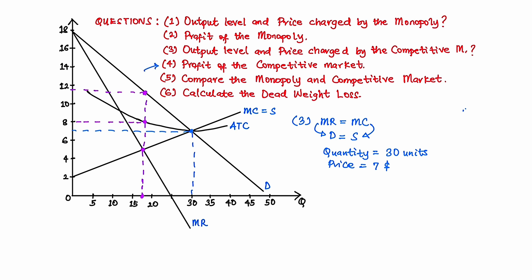Moving on to question 4: to determine the profit of the competitive market. The formula for profit, as stated before, is the quantity multiplied by the price minus the average total cost. So profit equals the quantity for the perfectly competitive market, which is 30 in total, multiplied by the price of $7, minus the average total cost. To find the average total cost of the perfectly competitive market, we go from the quantity all the way up to the average total cost curve.